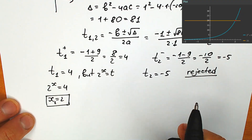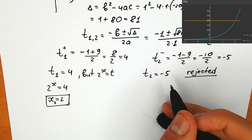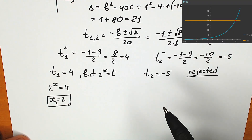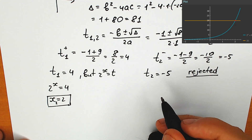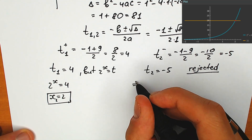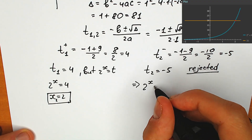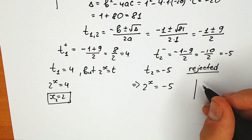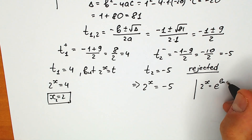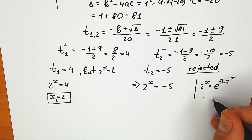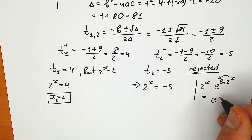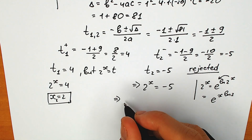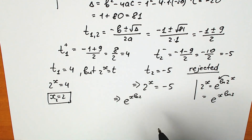We'll check this root a little bit later, but right now I'm going to solve the complex case. If we need to solve this question completely, we have 2 to the power x equals minus 5. Now, 2 to the power x can be written as e to the power x times natural log 2 — because by the log property, this x comes down. So 2 to the x equals e to the power (x · ln 2).